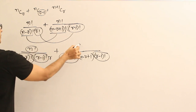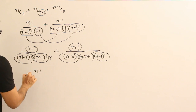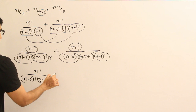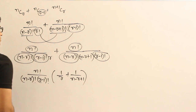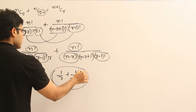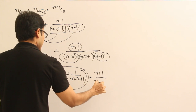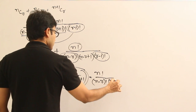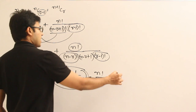In these two terms you can find that n factorial, (n minus r) factorial, and (r minus 1) factorial are all common — pull them all out. After pulling out, you get: n factorial divided by (n minus r) factorial into (r minus 1) factorial, multiplied by (1/r + 1/(n minus r plus 1)). Now combine those two fraction terms.